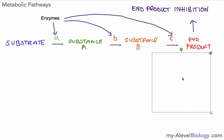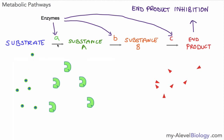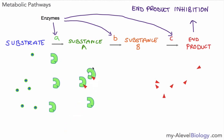This is controlled by a system called end product inhibition. When the end product builds up it has a particular molecular shape. It can fit into a site on the initial enzyme — not the active site, but another site — and once it does that it changes the shape of the active site, so the substrate can no longer fit in. This is non-competitive inhibition being used to slow down the production of substance A from the substrate. If substance A is slowed down, substance B is slowed down because there's less substance A present, and so on down the pathway, so we get less end product.